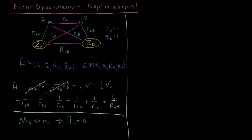This also makes the nuclear-nuclear repulsion much simpler, because that term now becomes a simple algebraic formula. Whatever positions we place nucleus A and nucleus B at, R_AB is going to be a constant throughout the entire calculation of the wave function.